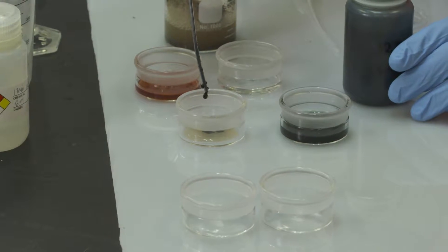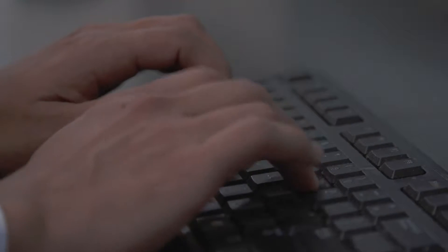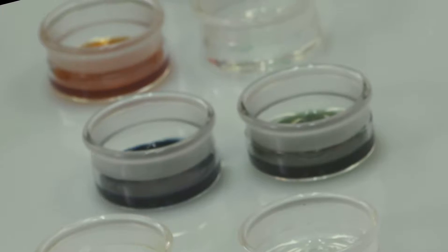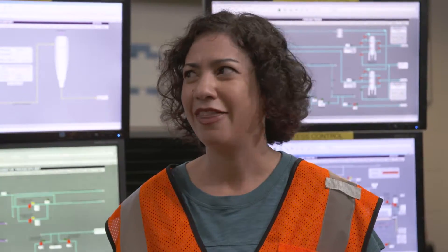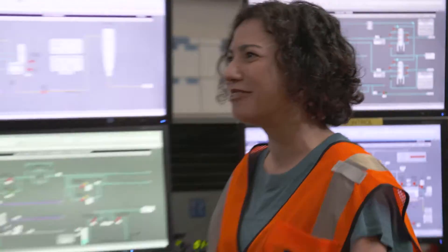So we've run our tests, and we've found out that our unknown buildup had calcium carbonate and iron sulfate in it. But what was causing it, and what's the best way to solve the problem? I think you've brought me here, Brian, to figure that out. Where are we?